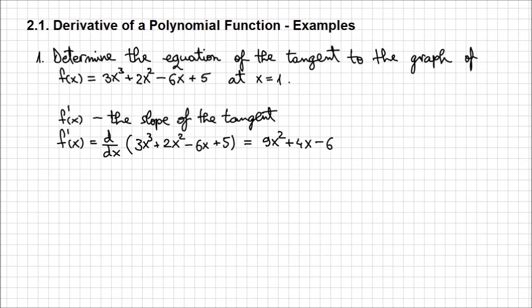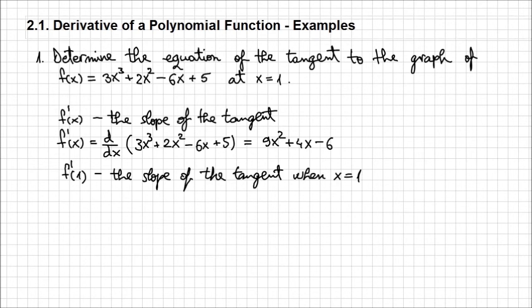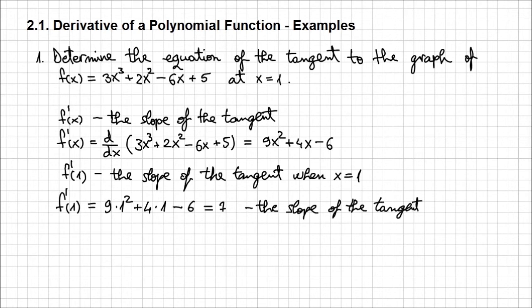Now what we need to determine is the equation of this tangent when x is 1. So the slope of the tangent only when x is 1 is important to us for this problem. So I'm going to have to determine f'(1), which represents the slope of the tangent when x = 1. That's easy to determine, right? f'(1), I'm going to plug this value of 1 everywhere I see x in the expression of f'(x). So I'm going to have 9 times 1² + 4 times 1 - 6, and this equals 7. This 7 represents the slope of the tangent to the graph of our function when x is 1. This is what we were looking for, the most important part.